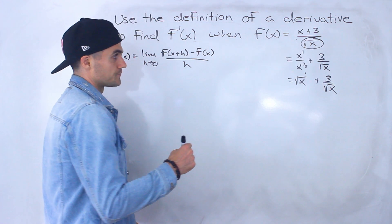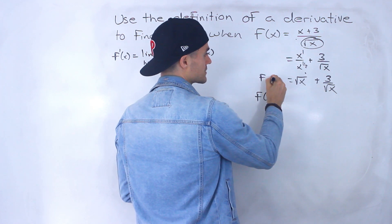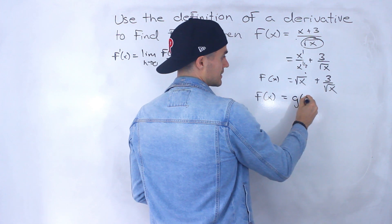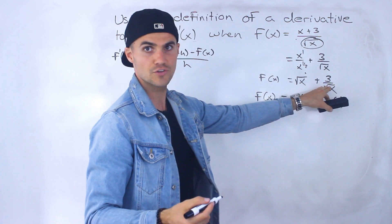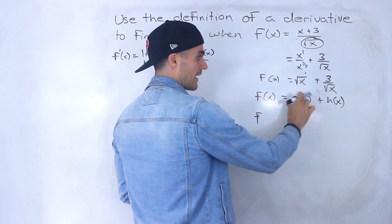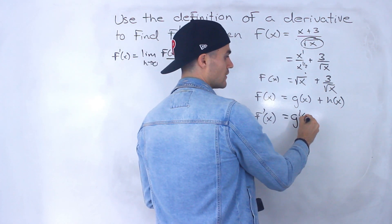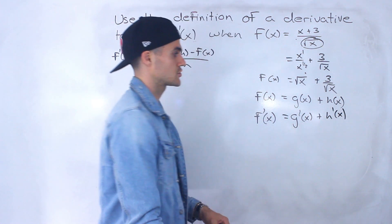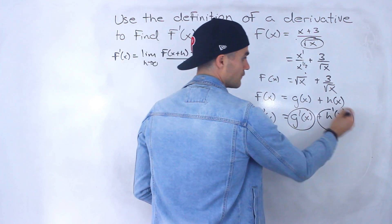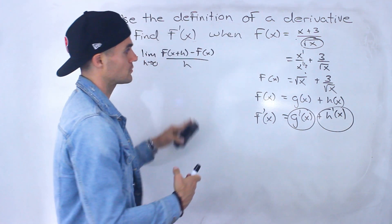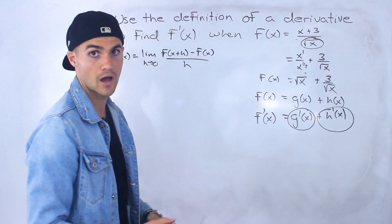Now we can look at these separately and find the derivative separately. Notice that f of x is basically two functions added together — g of x here, one function, plus h of x. Whenever you have two functions being added together, the derivative of the whole function is just the derivative of the first function plus the derivative of the second function. So I recommend finding the derivative of each separately and then adding them — doing the process twice is easier than that crazy algebra from before.